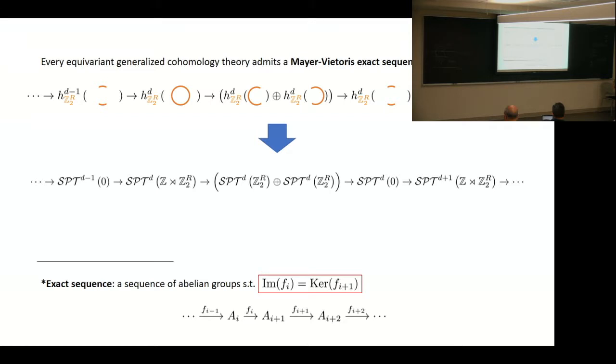After that, we rewrite the mathematical objects as classifications of SPT phases. As a result, we will get something like this. Here, crucially, we see that we have obtained an exact sequence that involves classifications for translation semi-direct reflection, classification without symmetry, and classification with only reflection symmetry.